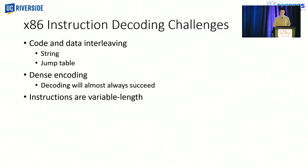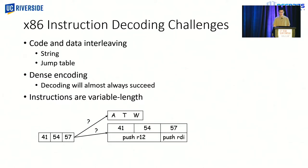There exist three challenges. The first is that code and data may interleave. The second, x86 has dense encoding, and the third, instructions are variable length. Take this three-byte sequence, for example. It can be interpreted as data, so these three letters, or it can be code or a mix, and there is no easy way to tell which case is true.